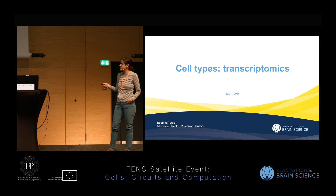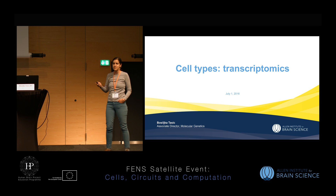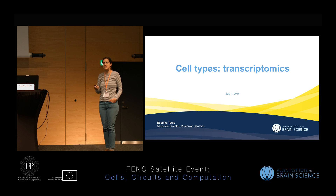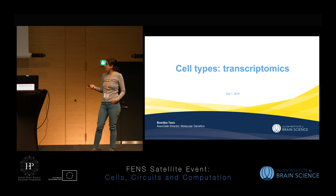We can classify groups of cells based on different types of characteristics. For neurons specifically, we can use electrophysiology, morphology, transcriptomics or transcriptional signatures, and function — those being the most commonly used ones. Costas will talk more about electrophysiology and morphology, and I'll touch briefly on that. I'm going to talk mostly about transcriptomics.